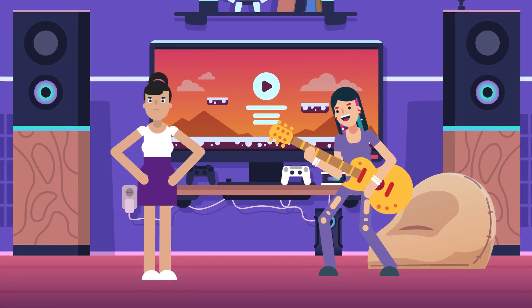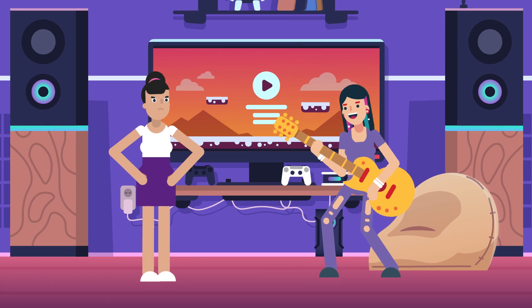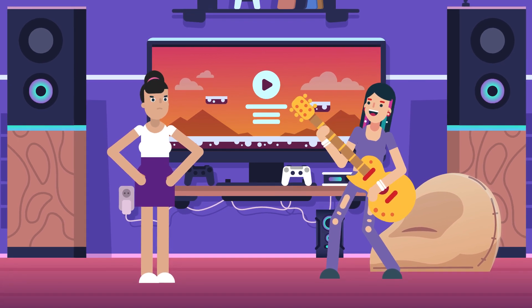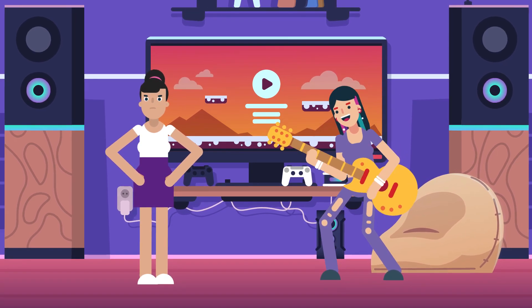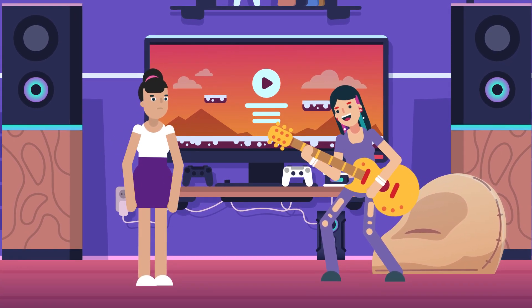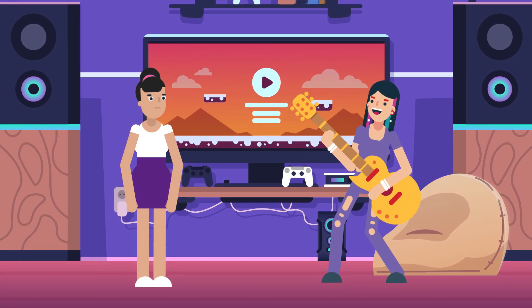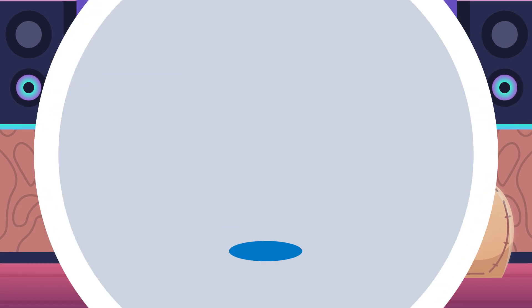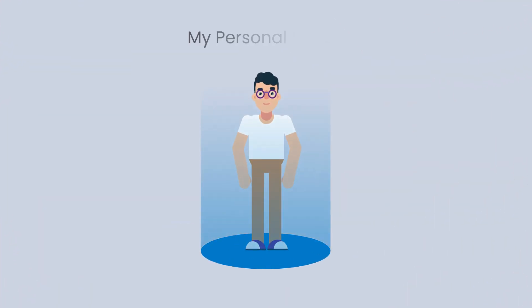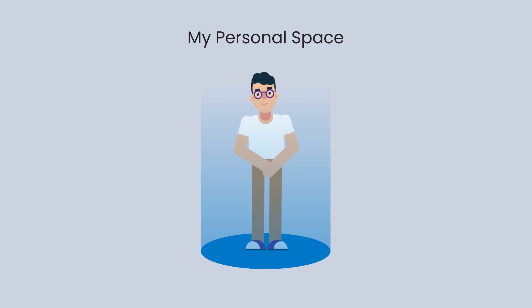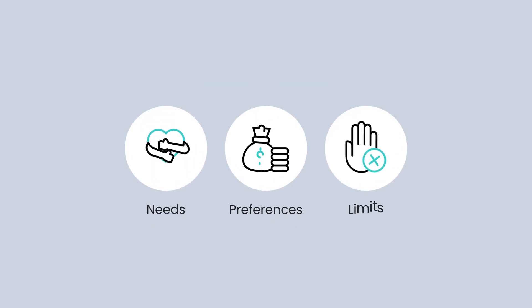Psychological boundaries refer to the limits a person sets regarding what they consider acceptable behavior from others towards themselves. Psychological boundaries are crucial for healthy relationships and self-esteem, determining how individuals communicate their needs, preferences, and limits.